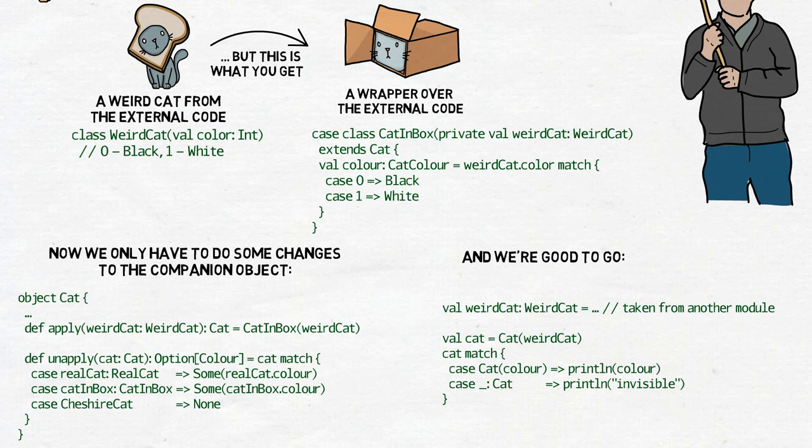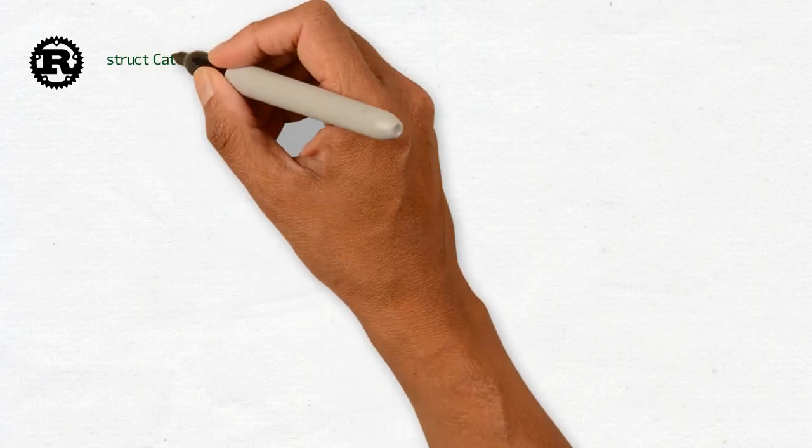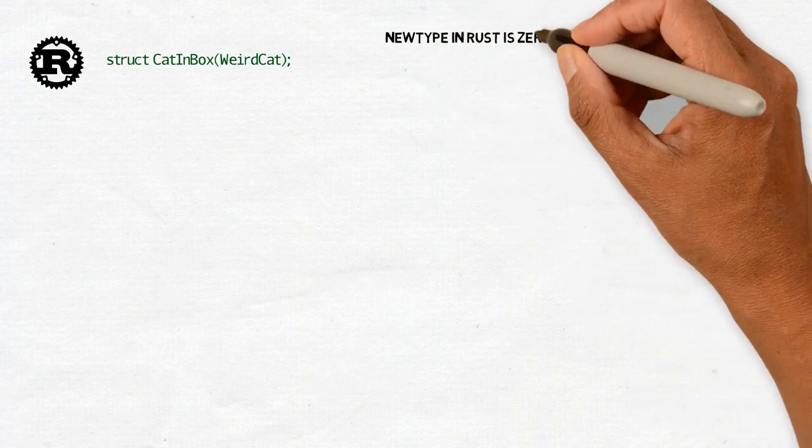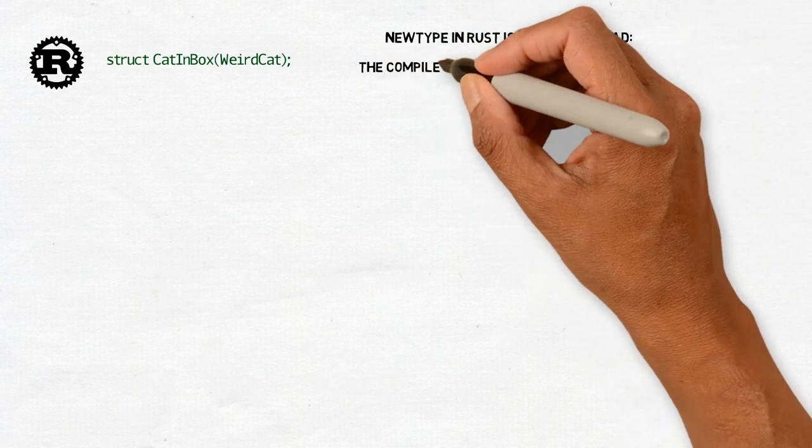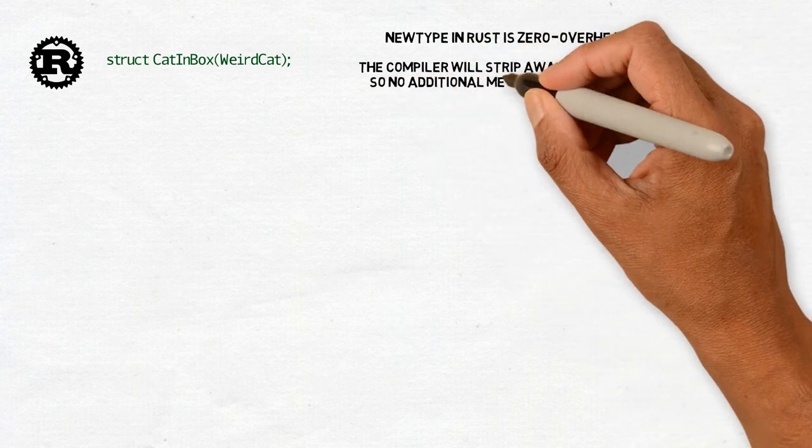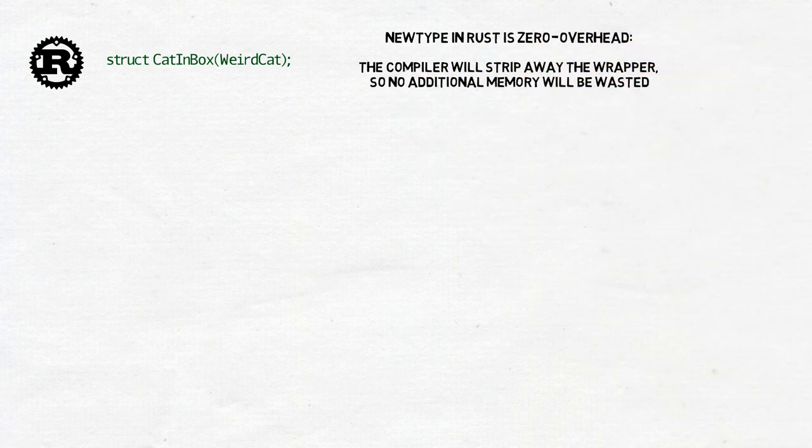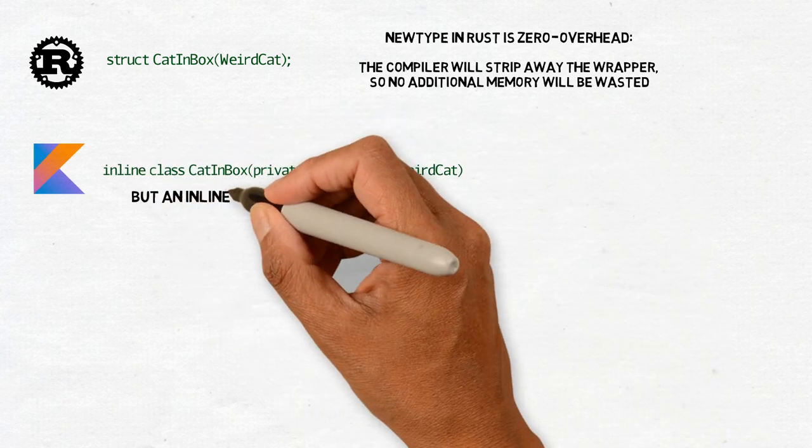The NewType pattern was around for a long time, but recently it got a bit more popular because of Rust. Rust tries to marry functional programming and type safety with pretty low-level hacks, and quite often programmers find themselves working with primitive types and still wanting to use pattern matching on them. NewType is a way to do it. It became so common that Rust introduced an optimization. When a struct has only one field, the compiler will strip away the wrapper, so no additional memory will be wasted.